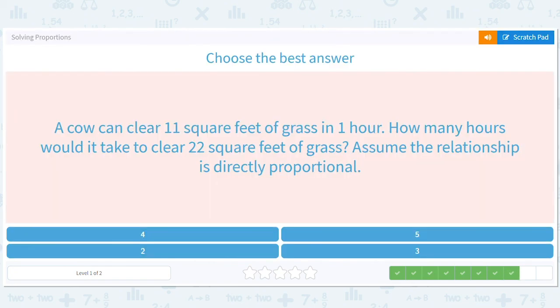A cow can clear 11 square feet of grass in one hour. How many hours will it take to clear 22 square feet of grass? Another one, simple one. One for 11. 22 is two times 11. So it should take twice as long. Two hours.